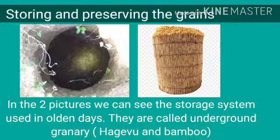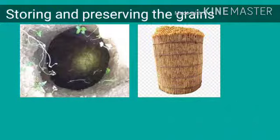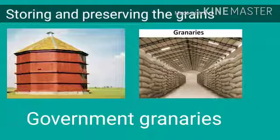Storing and preserving the grains after the harvest of the crop is also very important. In the first two pictures, we can see the storage systems used in olden days. They are called underground granary, hagivu and bamboo granary. These are traditional methods of storing grains.